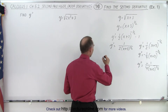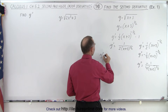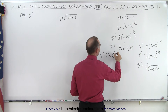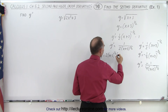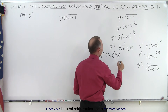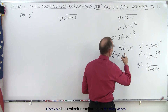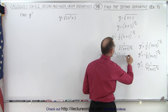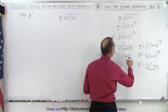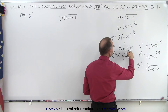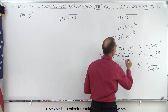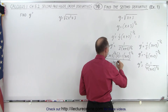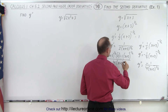We're not using the power rule now — we're using the quotient rule, which takes more space. So y double prime equals the denominator, 2 times x plus 3 to the 1 half power, times the derivative of the numerator, which is 0, minus the numerator times the derivative of the denominator, which is 1 half times 2, which is 1, times x plus 3 to 1 less than 1 half, that's minus 1 half, all divided by the denominator squared, which is 4 times x plus 3 to the first power.